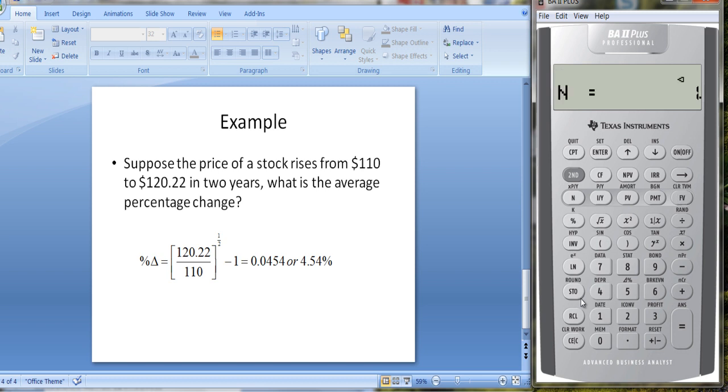and we had a price of $110 in the first period, you have to make sure you put it in as negative for the present value. The future value was $120.22, so we put that in as a future value and compute the interest, and we get 9.29%.